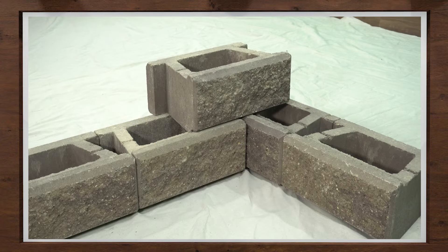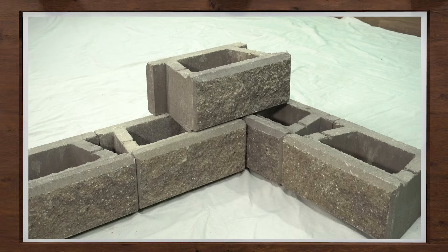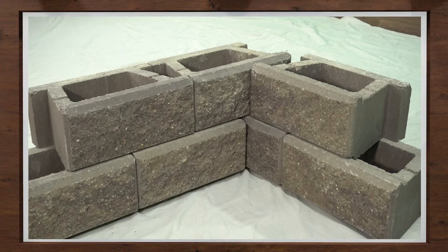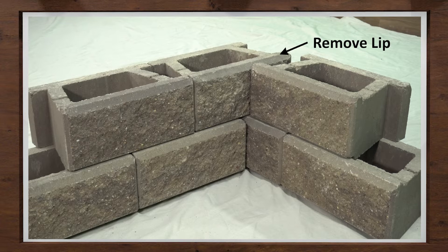For the next course, you will place an AB Classic block over the block with the lip removed. Then add another full AB Classic block placed to form the corner. You would repeat this layout for each course as needed, alternating the direction of the block with the lip removed.